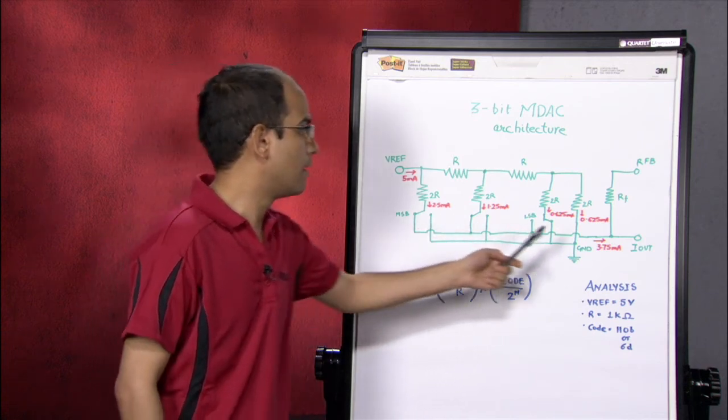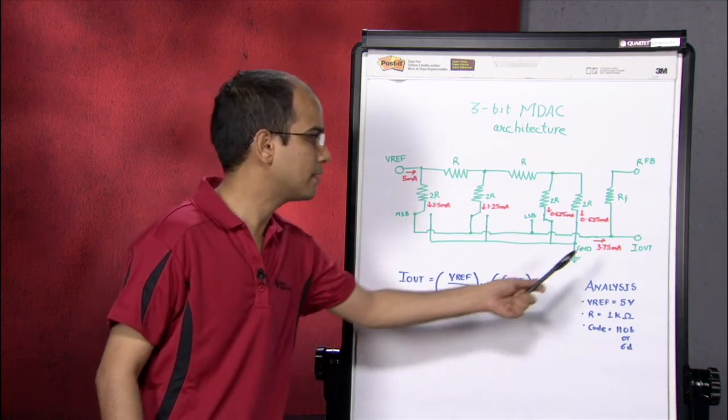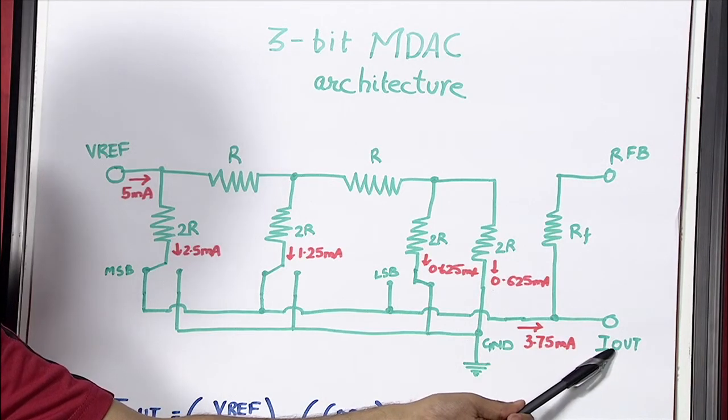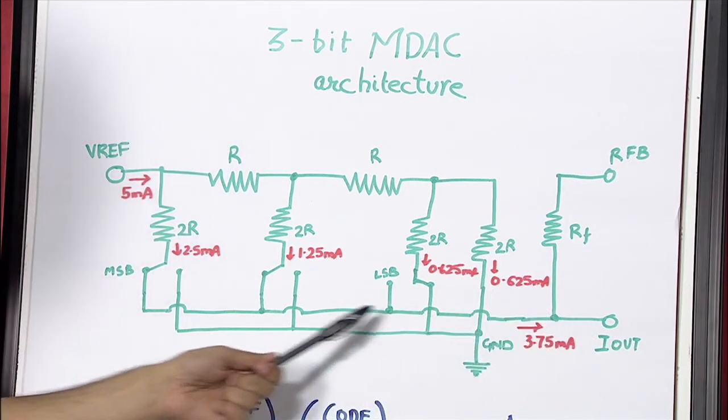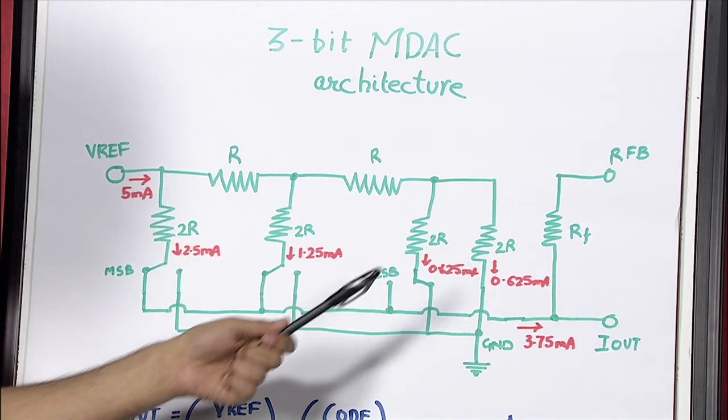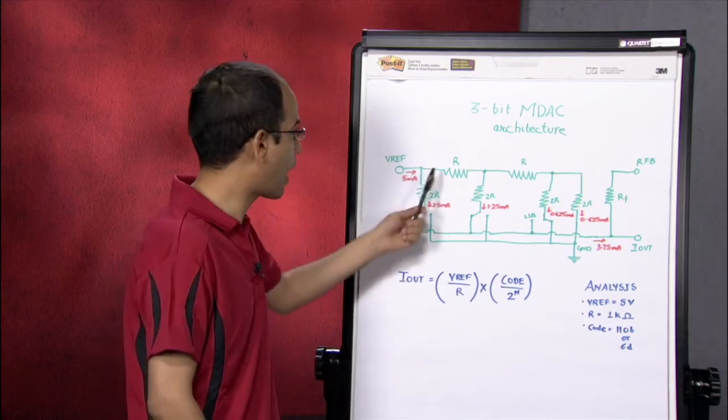Typically, MDACs would be always used with an op amp. That means this terminal IOUT would be at virtual ground. So, if you consider this terminal IOUT at virtual ground, the equivalent series resistance turns out to be 1k, or R in this case.